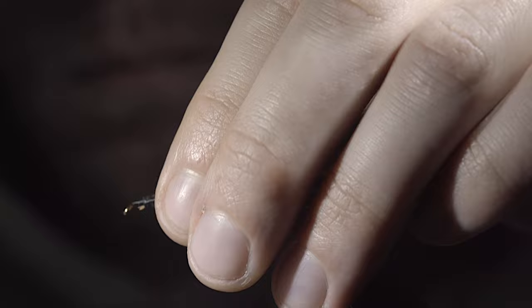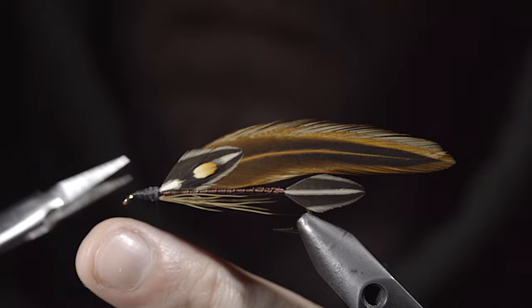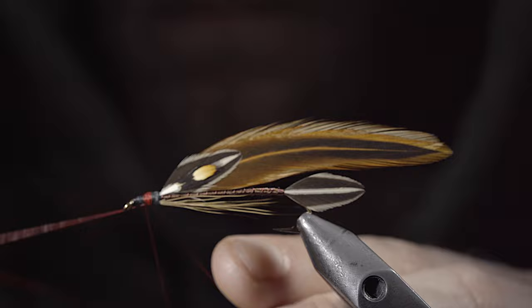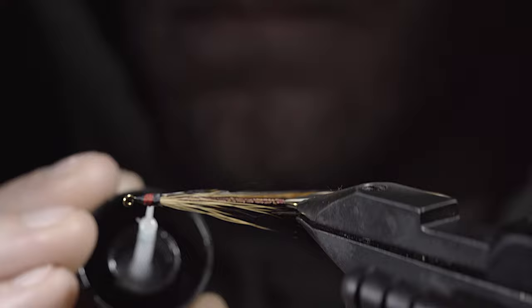Whip finish for durability and snip the excess free. In true Carrie Stevens fashion, we are going to create a hot spot on the head of our fly. Whip finish, snip your excess free, and paint it with some UV resin to secure it tightly.